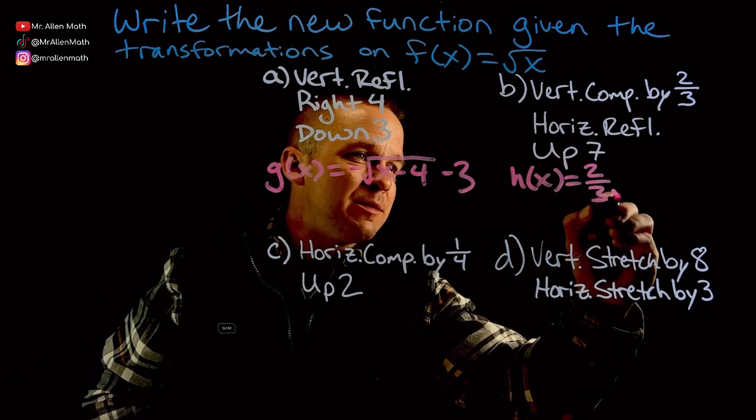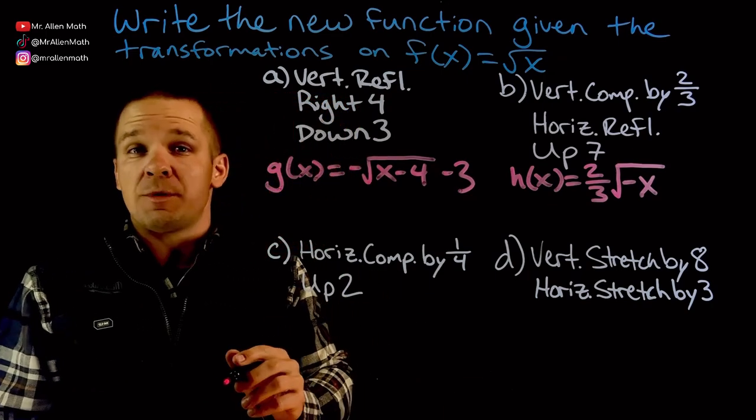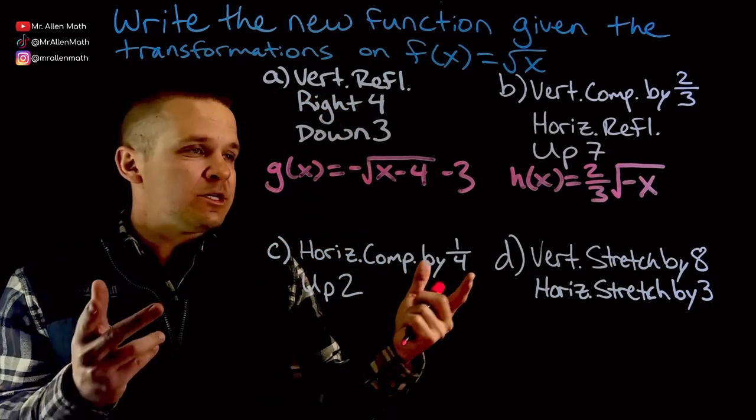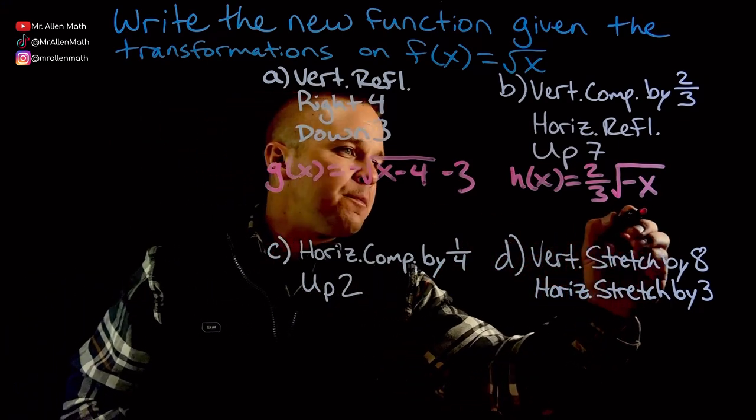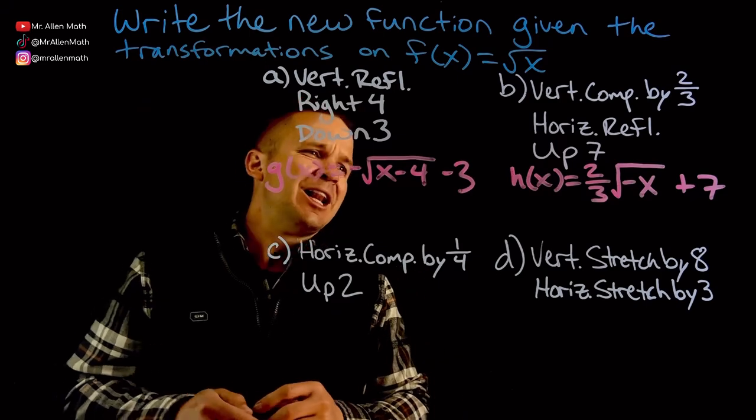Then we've got a horizontal reflection. That means I'm going to have a negative x on the inside of that function. That's going to be a horizontal reflection, a reflection over the y-axis would be another way of wording that. And then I've got up 7, so plus 7 on the outside.